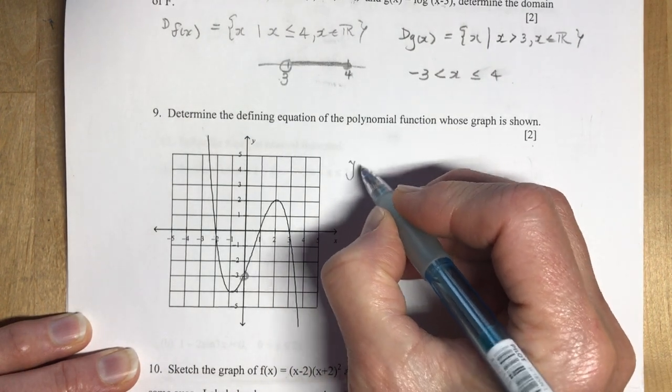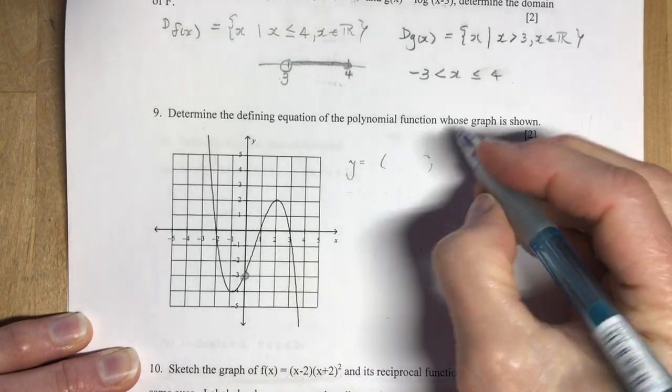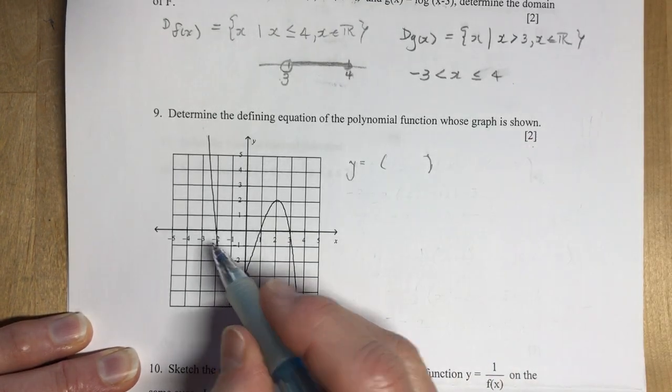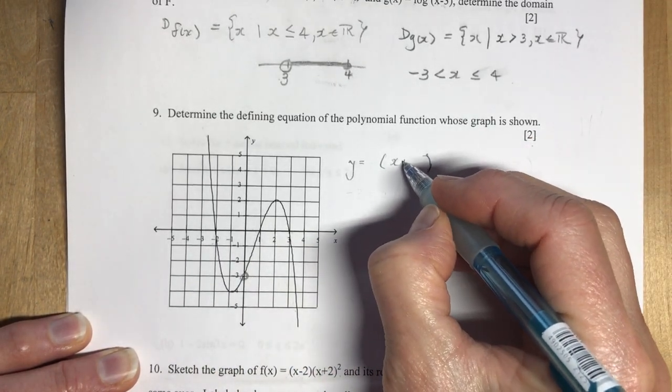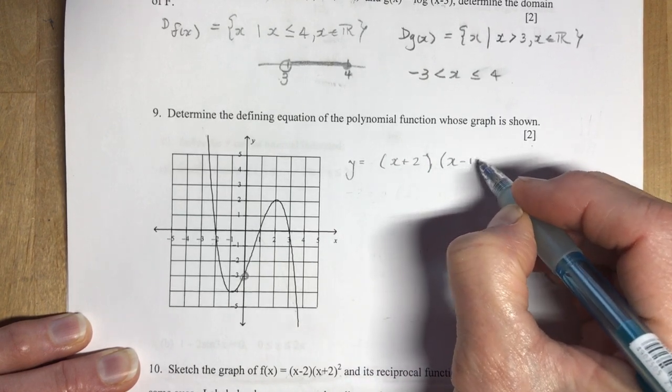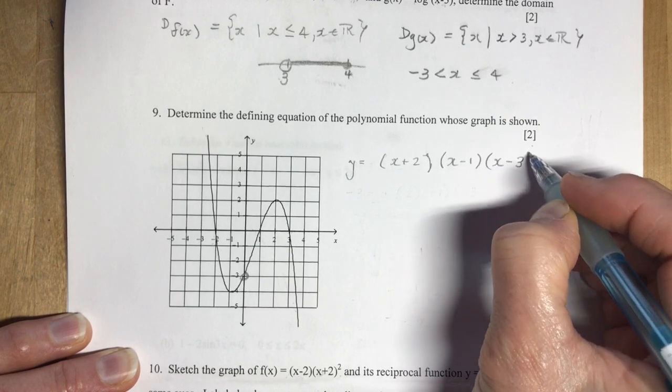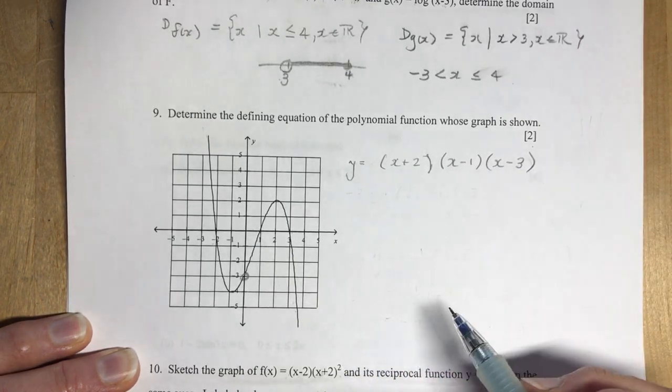I can start by writing out what do I know about where the roots are. So I have minus two, so that gives me x plus two, and I have one, so that's x minus one. Remember, it's what makes this zero. So here's my beginning equation.